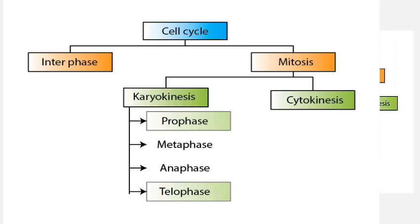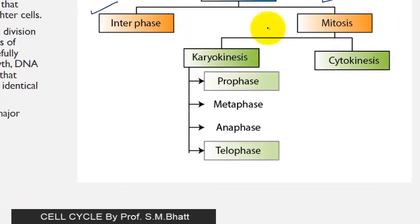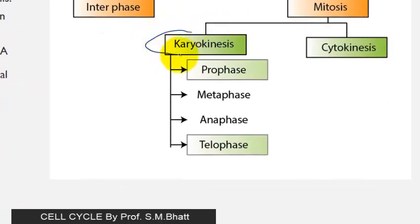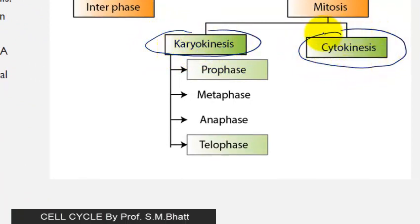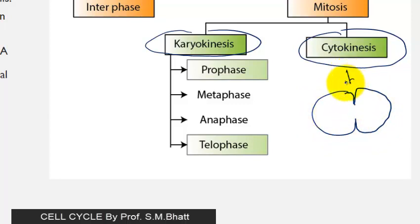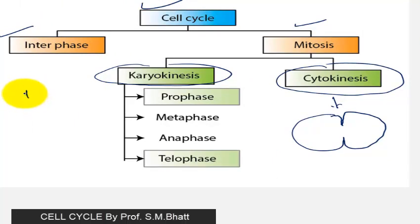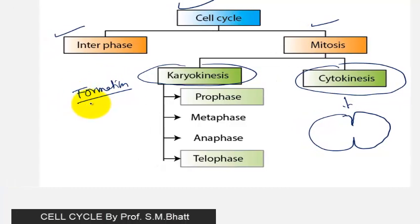Looking at the diagram, the cell cycle divides into interphase and mitosis. Mitosis further divides into karyokinesis — where karyon means nucleus — and cytokinesis, where the cell divides into two. During cytokinesis, nuclear changes occur. In prophase, large amounts of protein material are formed, including DNA and spindle fibers — everything becomes available in prophase.